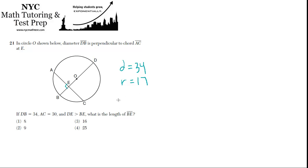They're telling us that AC is 30. One of the things that happens in this situation is that the chord that meets the diameter at a right angle gets bisected by the diameter. So if AC is 30, then AE must be 15, and EC must also be 15.